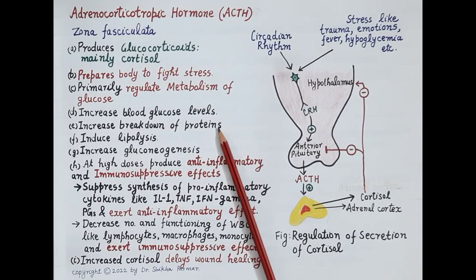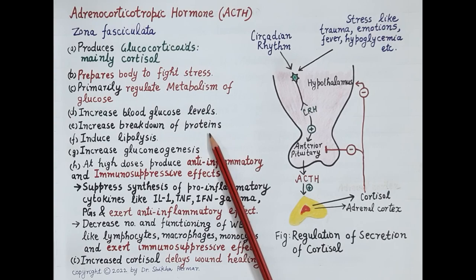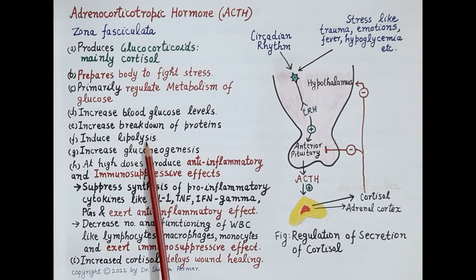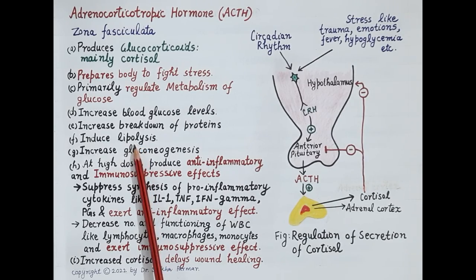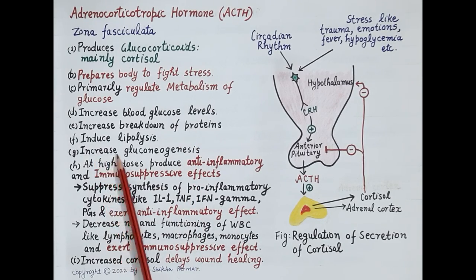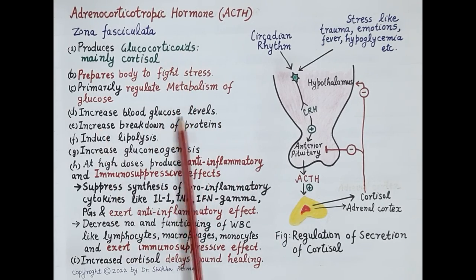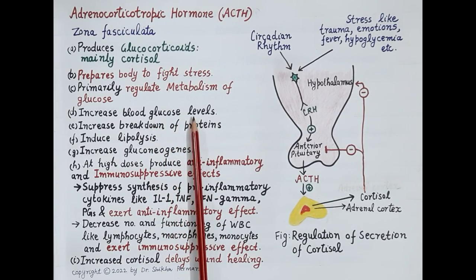These amino acids are converted to glucose — that is, glucose is produced from a new source, namely amino acids. Glucocorticoids also induce lipolysis, so fats are broken down to fatty acids, which are used as a source of energy. As amino acids are converted to glucose, glucocorticoids increase the process of gluconeogenesis. In summary, the main function of glucocorticoids is to increase blood glucose levels to prepare the body to fight stress.